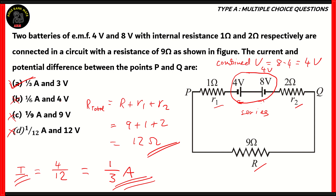But we would be confused as to how it's 3 volts, and we're here to remove that confusion. So let's look at how the potential difference between P and Q is 3 volts. When calculating potential difference, it's important to understand the flow of current. We know that the combined voltage is 4 volts. The direction would be in the direction of 8 volts because that's the larger value. So the current will flow in the counter-clockwise direction from positive to negative.